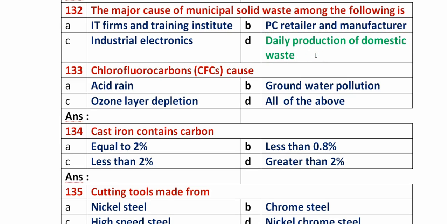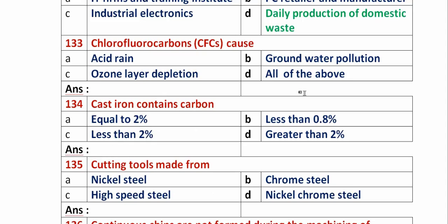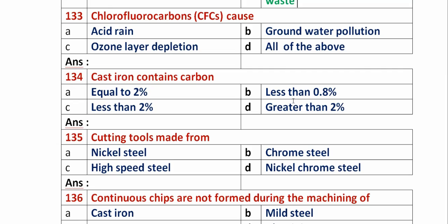Question 133: Chlorofluorocarbons (CFCs) cause? Option A: acid rain. Option B: drinking water pollution. Option C: ozone layer depletion. Option D: all of the above. Chlorofluorocarbons (CFCs) cause ozone layer depletion. So option C is the right answer.